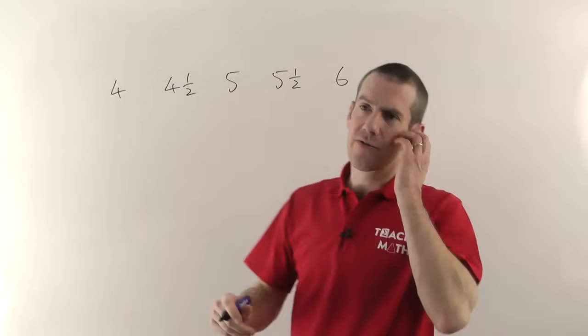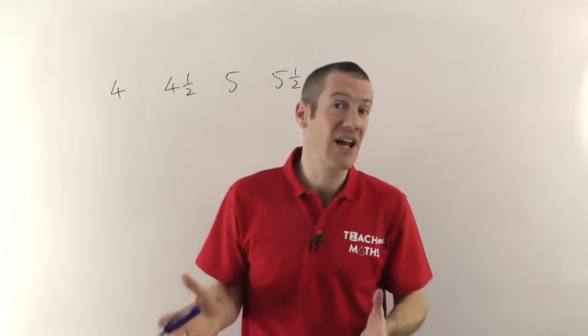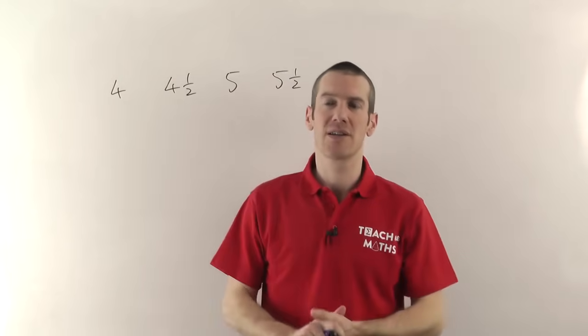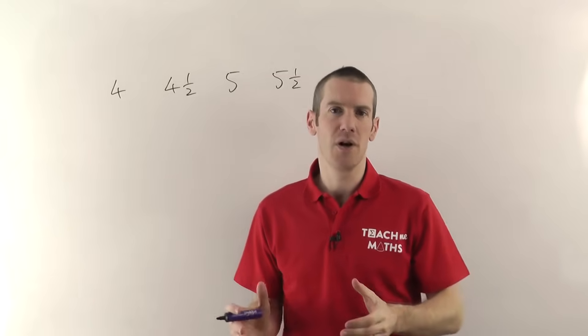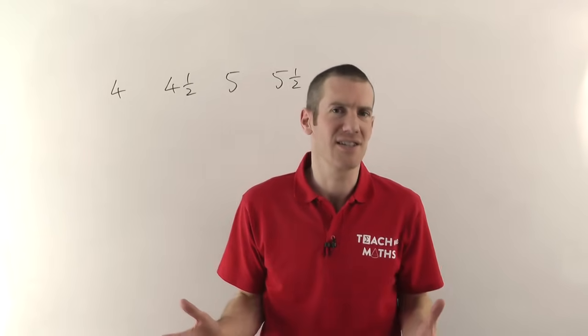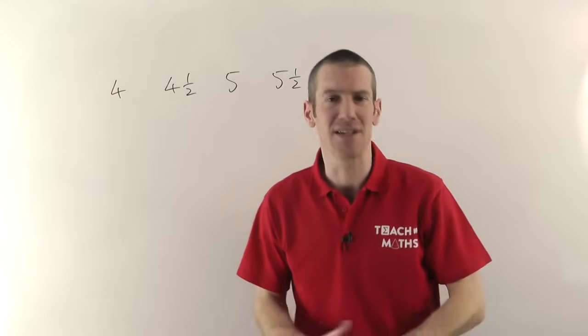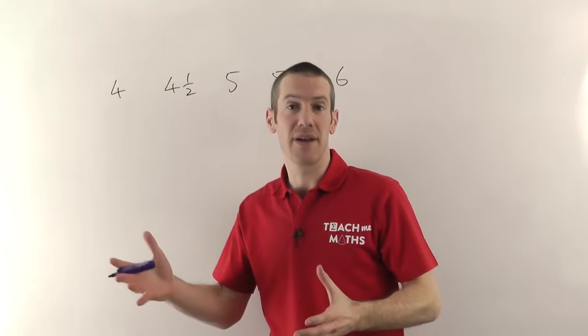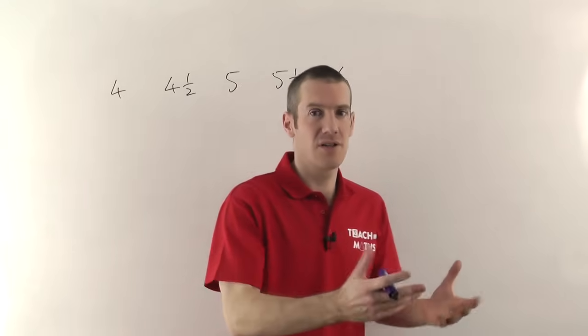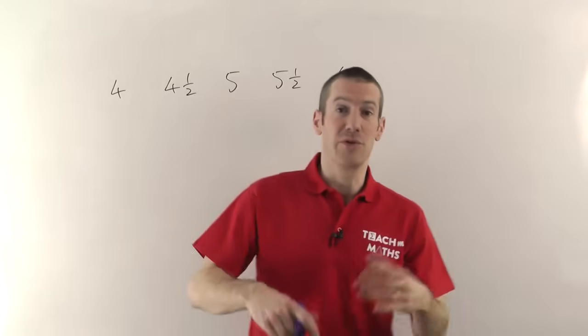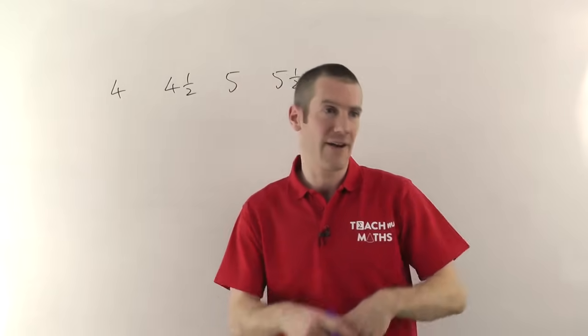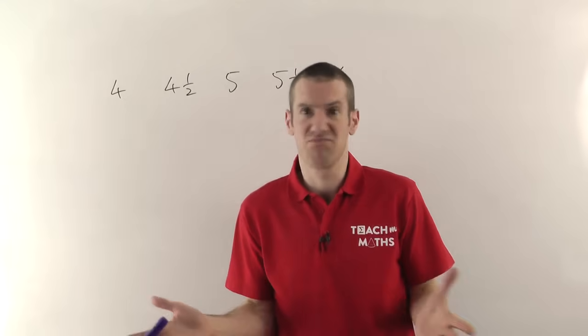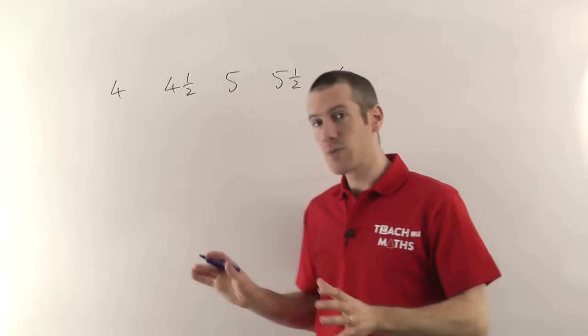Another example would be, say, if you're talking about the number of people in a classroom. There might be 20 people in a classroom, there might be 22 people in the classroom, but you couldn't have 21.5 people. That wouldn't make any sense - you can't get half people, they don't exist. So that would be another example of discrete data. And in general, anything that's a number of something will be discrete. So the number of computers, the number of chairs, the number of cars - those things are all discrete. You might have five cars, you might have six cars, you can't have 5.3 cars. It just doesn't make any sense, it doesn't exist.